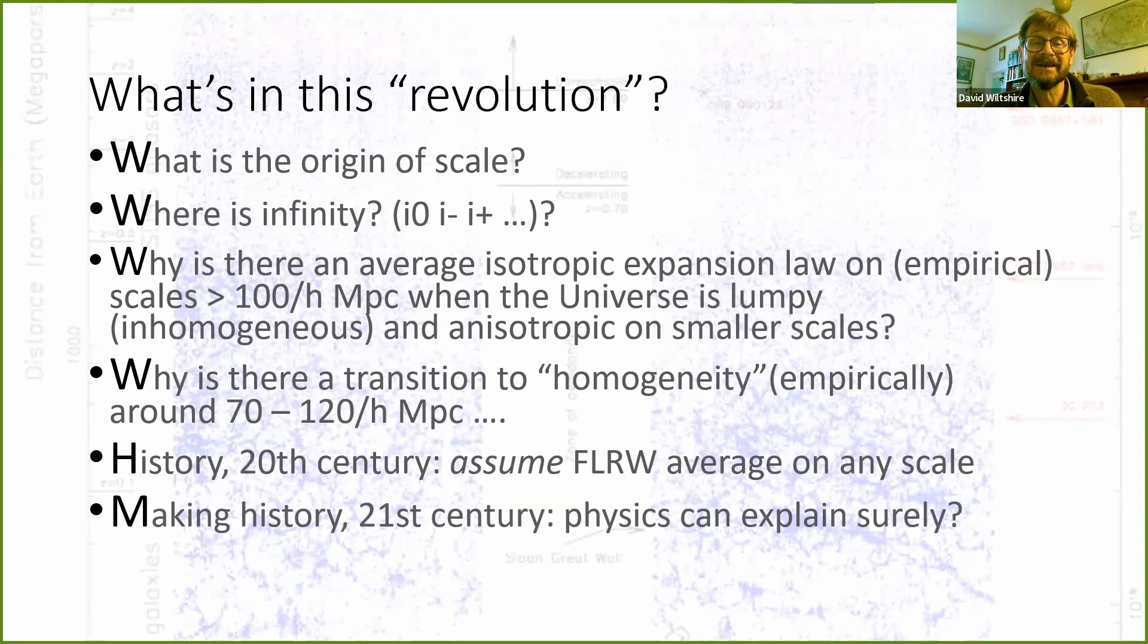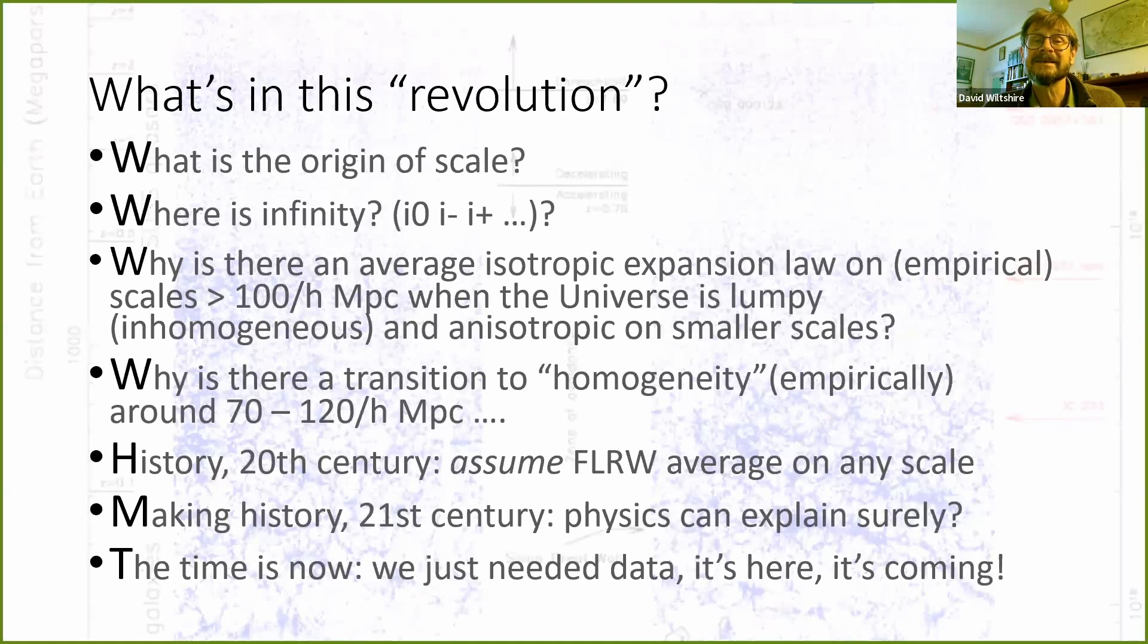Historically, we assume that there is an average isotropic expansion, we put it in by hand, but we don't need to, and that's the point. Theory, if it advances, should explain it, and I have some of the ingredients, not the final theory, of course. Nobody does, it's going to take a few decades. But these are the questions that need to be asked, and we just need data to ask better questions. The data is coming now thick and fast, and it's really high time people stopped using this century-old model. It is past its use-by date, folks.